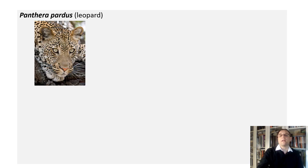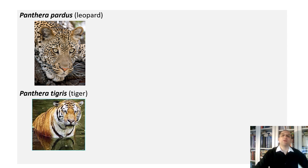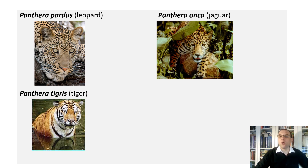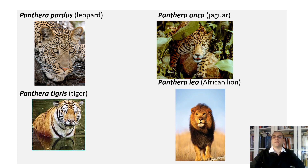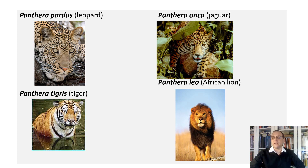Use of binomial names for species makes it easier to learn how closely species are related. The scientific name for leopard is Panthera pardus; for tiger, Panthera tigris. Both belong to the same genus, Panthera, but are different species. The jaguar is Panthera onca, and the African lion is Panthera leo — so from the names alone, you can instantly see that leopards, tigers, jaguars, and lions are closely related members of genus Panthera, though they are not the same species. Binomial nomenclature is a quite handy tool.